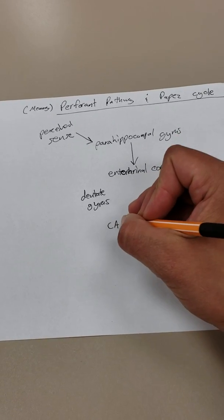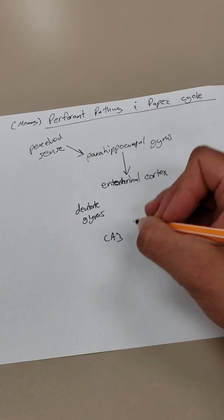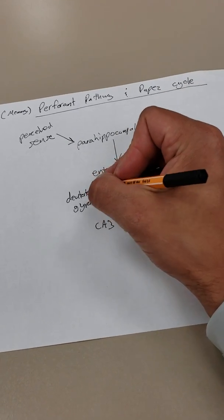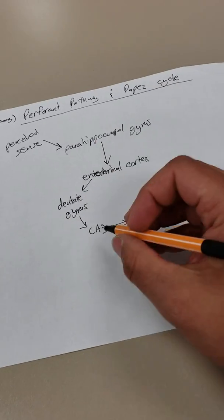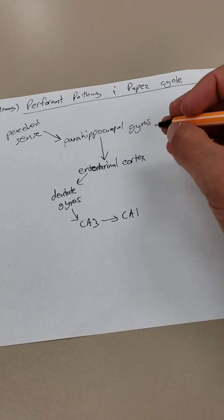From here, we're going to travel through all of our CA sections. If you remember, there's CAs 1, 2, 3, and 4. The traditional way to learn it is that it goes from CA3 to CA1. But don't forget, there are other pathways. But CA3 to CA1 is the traditional perforant pathway.